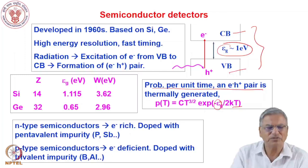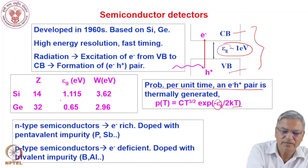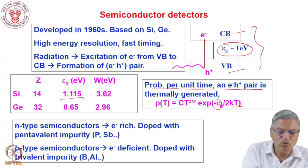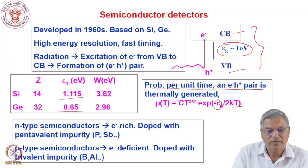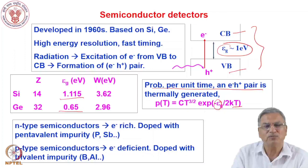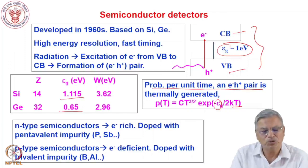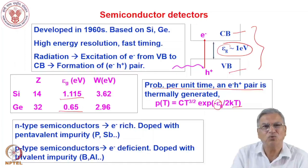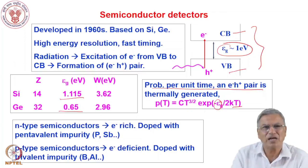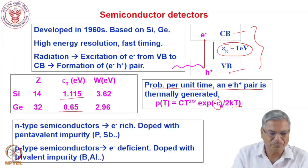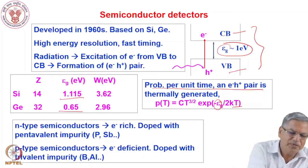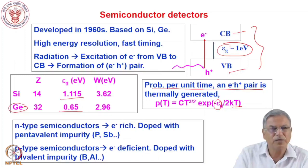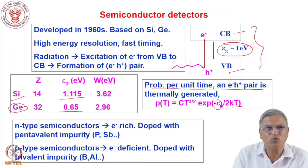The band gaps of the main detector materials are: silicon at 1.115 eV and germanium at 0.65 eV. The W values — energy required to create one electron-hole pair — are higher than the band gaps, as in gaseous media, because not every interaction leads to electron-hole pair formation; sometimes electrons and holes get trapped and are not collected. Germanium, being higher Z, is used mainly for gamma ray spectroscopy, while silicon, being lower Z, is used for alpha counting and other charged particles like protons and heavy ions.